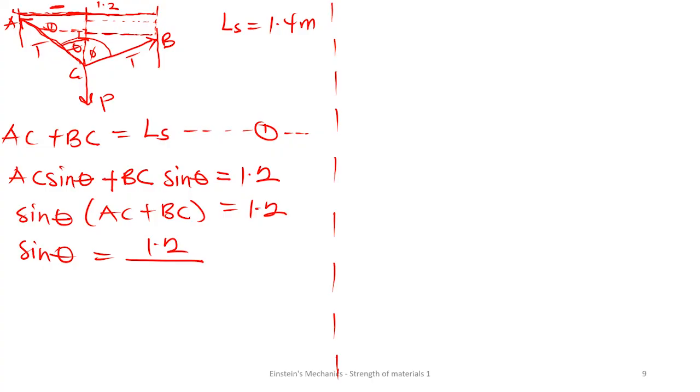So sine theta can be equal to 1.2 over 1.4, which implies that our theta is going to be sine inverse of 1.2 over 1.4, and this is going to give us an angle of 59 degrees.